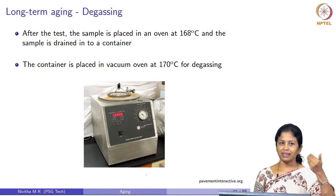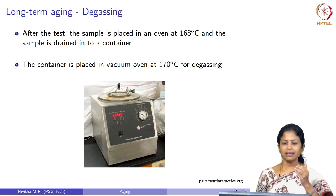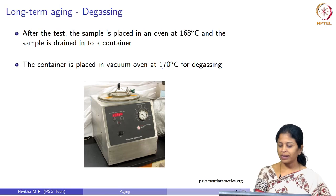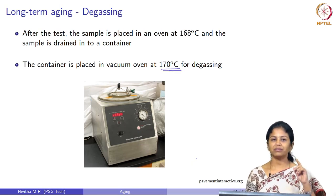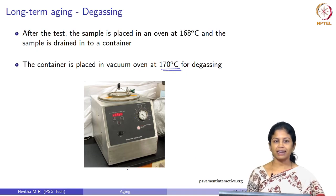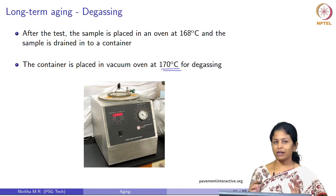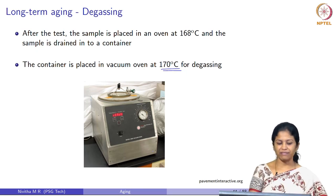At the end of 20 hours, the sample is removed, placed in an oven at 168 degrees Celsius, and drained into a container. This sample is then placed inside a vacuum oven at 170 degrees Celsius for degassing, because the long-term aging is performed under pressure. At the end of this process, the sample represents the condition of bitumen after it has been laid in the pavement for about 7 to 8 years.